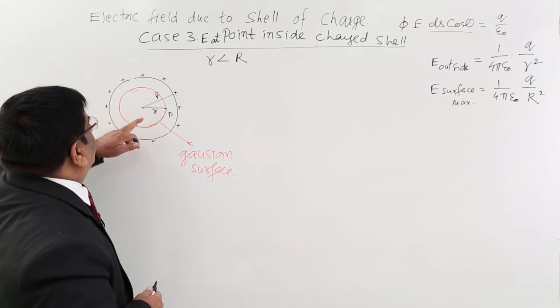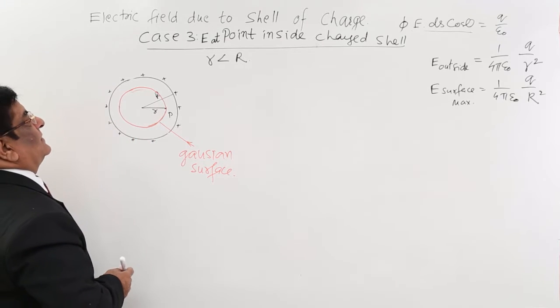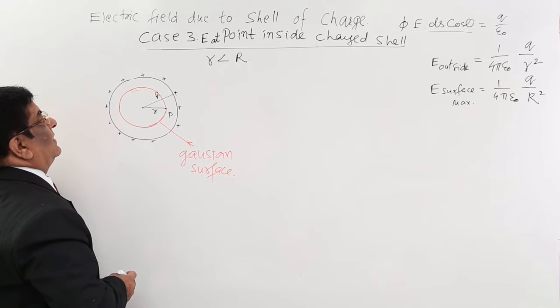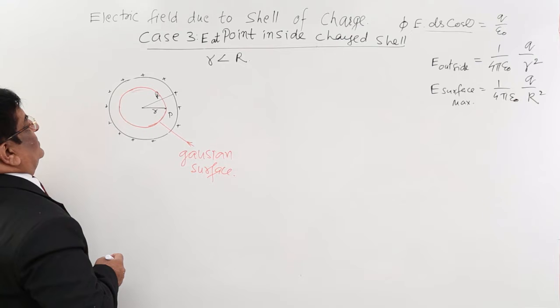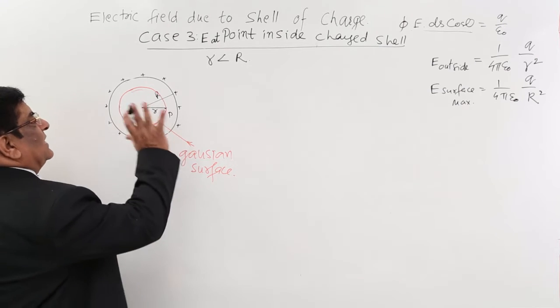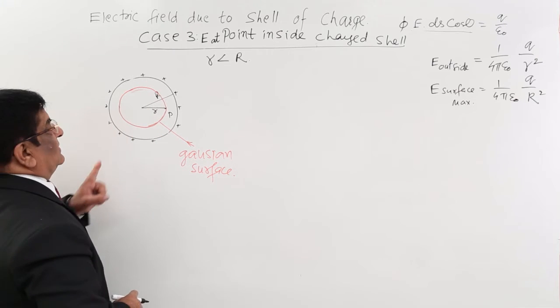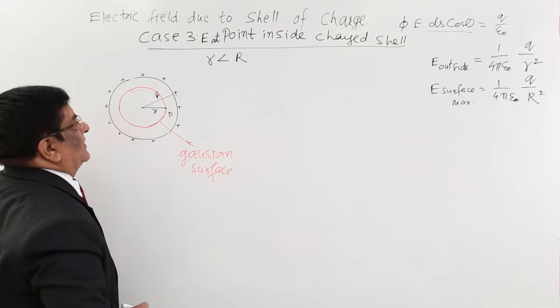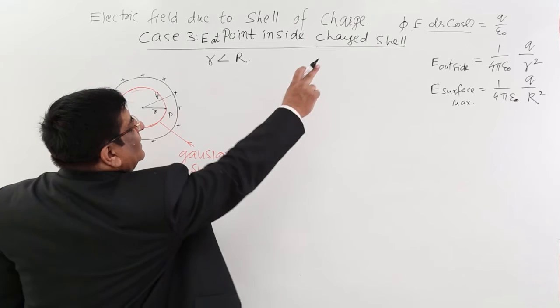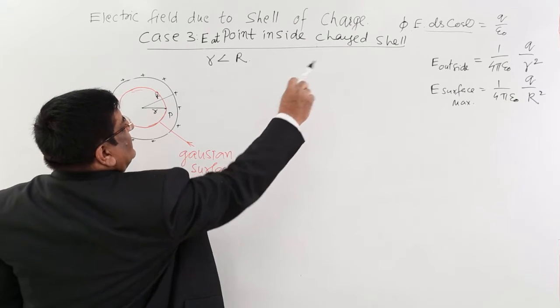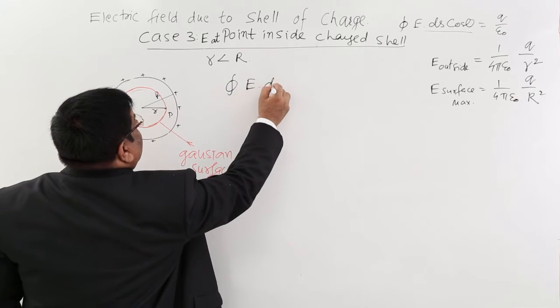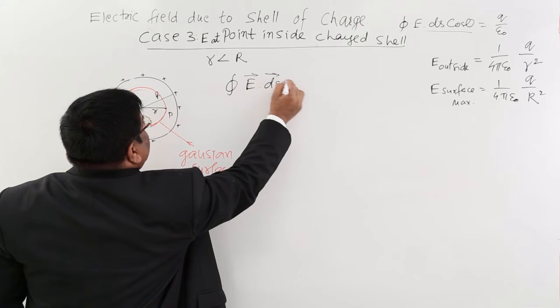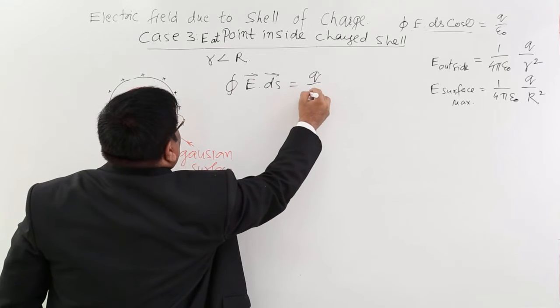So what is electric field on this surface? And how I plan it? Yes, we start the calculation because this is a very short calculation. Our calculation for Gaussian purpose is that closed integral E·ds equals q upon epsilon 0.